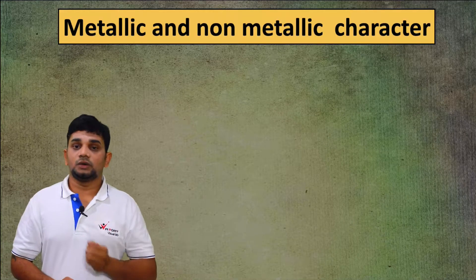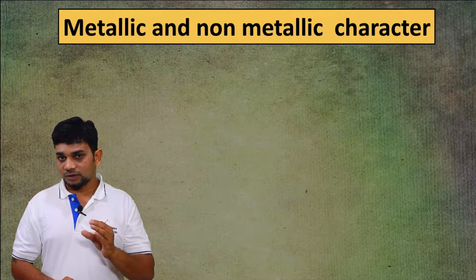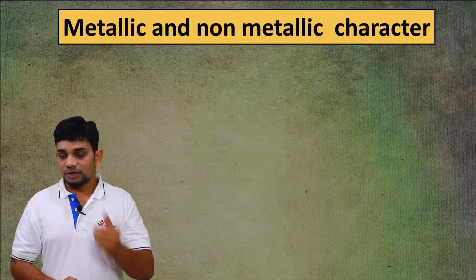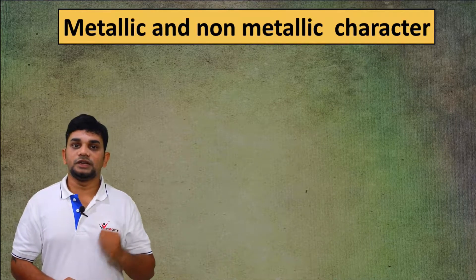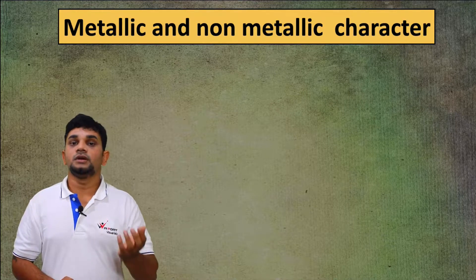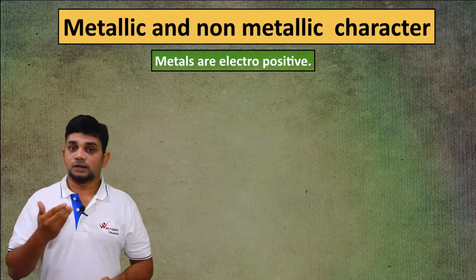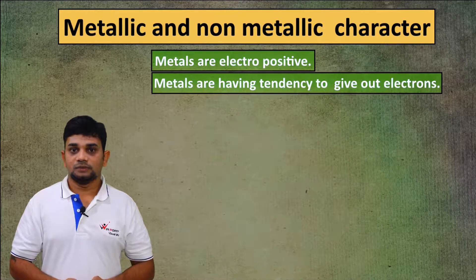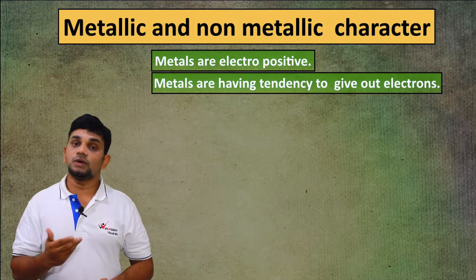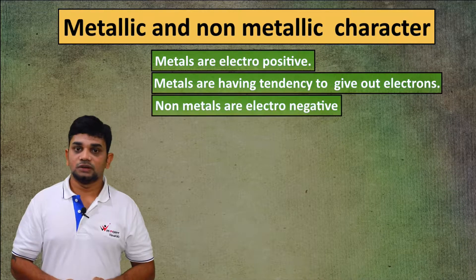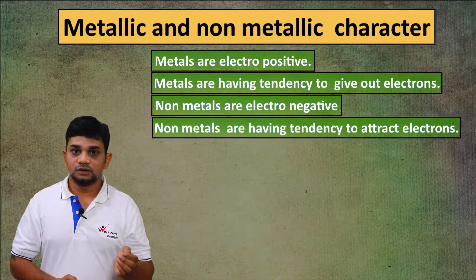Metallic character means it is the ability to donate electrons. Non-metallic character means it is the ability to accept electrons. Metals are electropositive — they have a tendency to give out electrons. Non-metals are electronegative — they have a tendency to attract electrons.